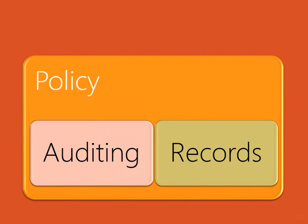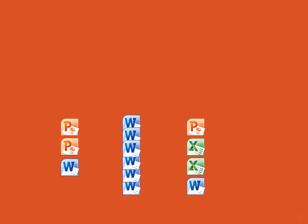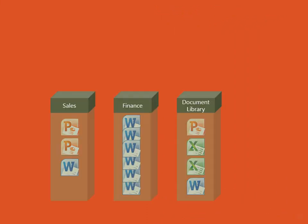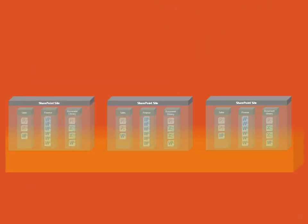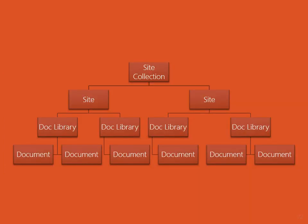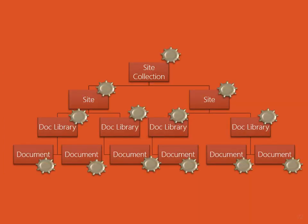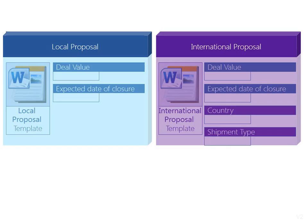Before we dive into it, let us recap how SharePoint works. It starts with documents which are stored in libraries. Many libraries form a site, and soon you will have a collection of sites. Settings automatically flow from top to bottom. Similar types of documents are organized using content types.